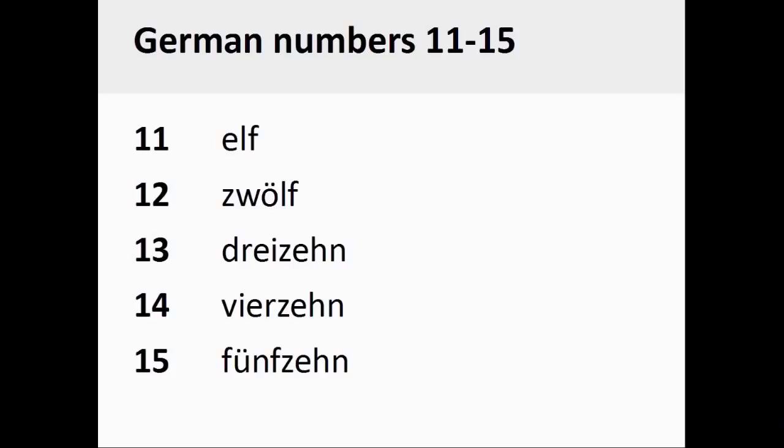The German numbers 11 through 15 are pronounced elf, zwölf, dreizehn, vierzehn, fünfzehn. Again, these numbers are formed in a manner that is similar to English.